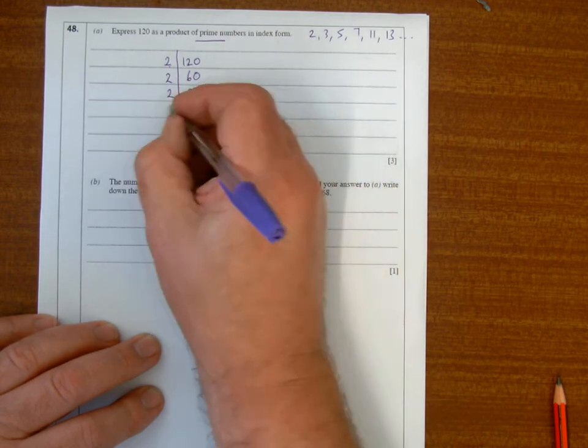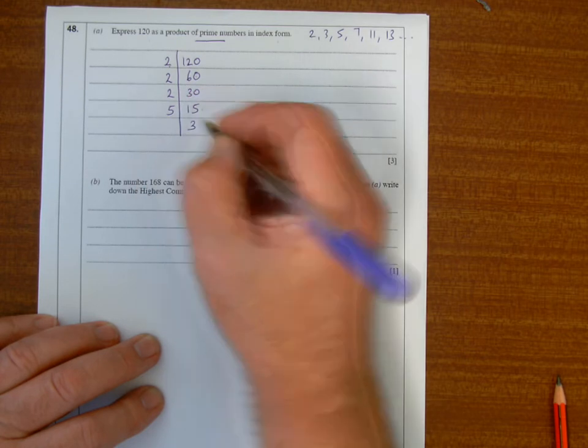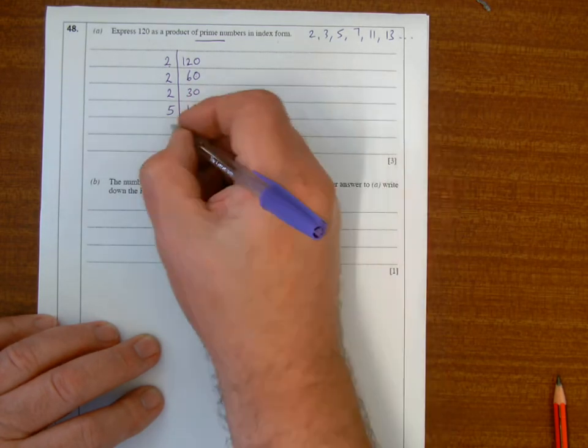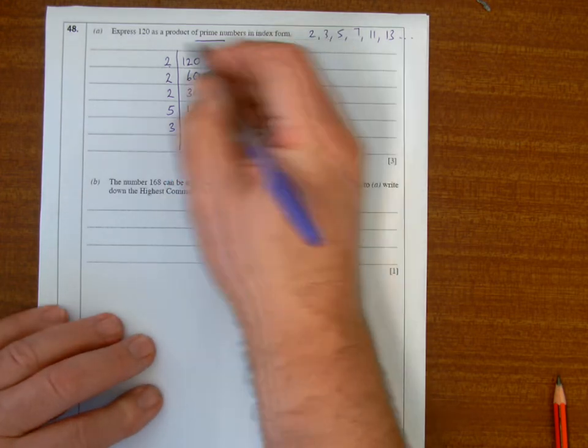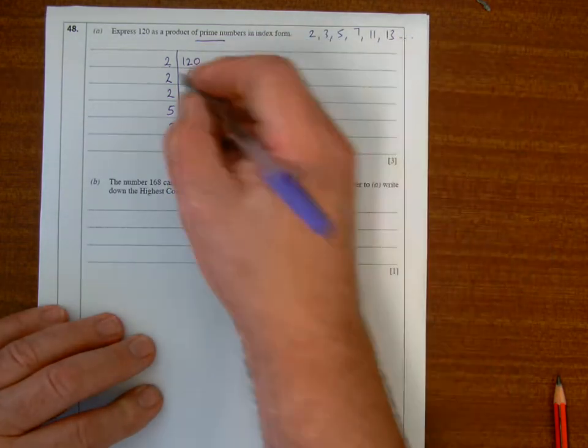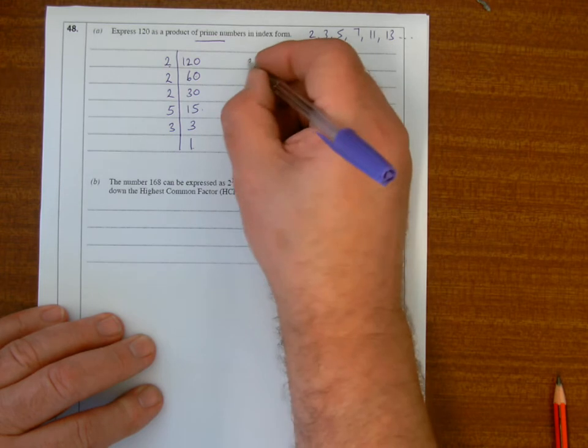Then obviously 5 goes into 15, so 5 goes into 15 three times. 3 is also on the list, so 3 into 3 goes 1. Once I get a 1 here, I'm finished.